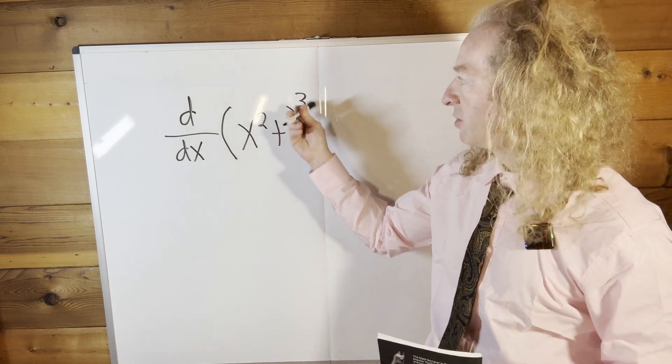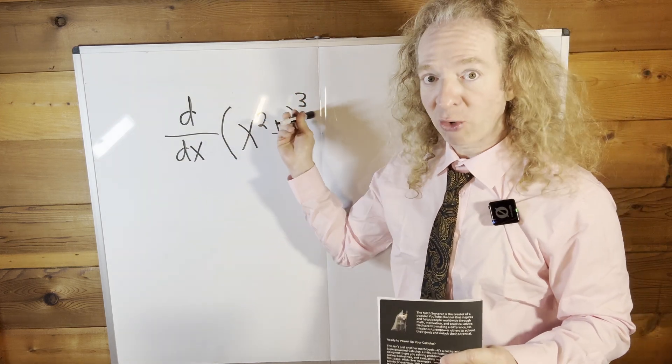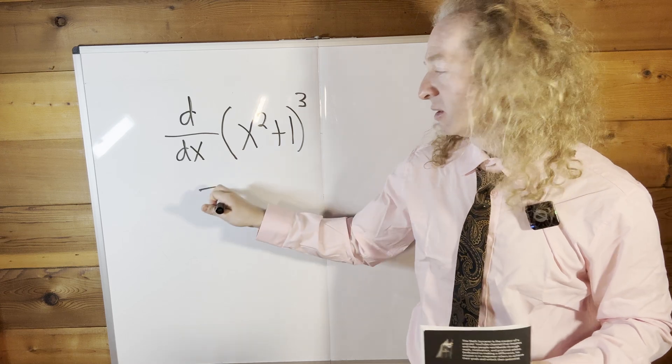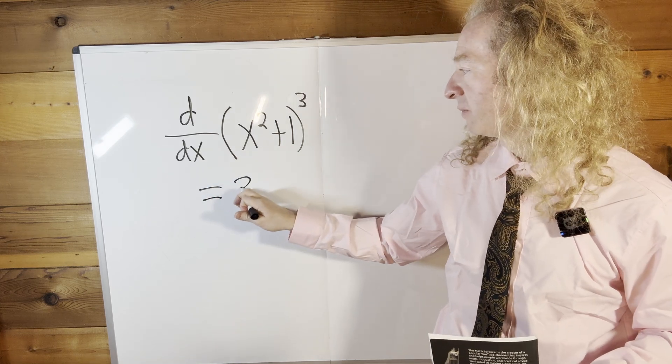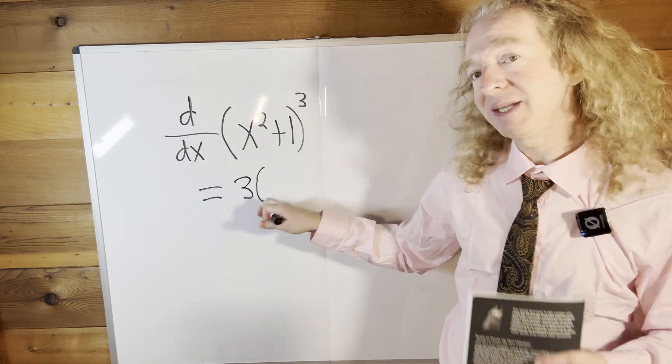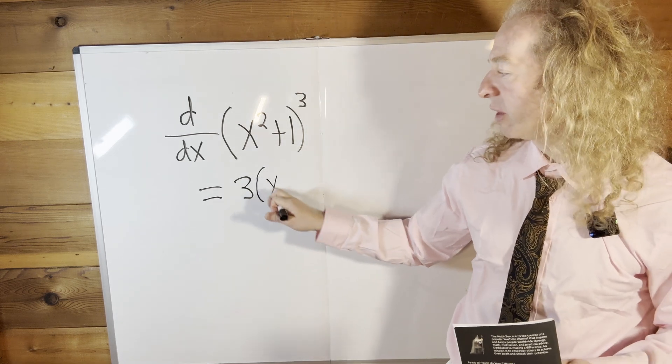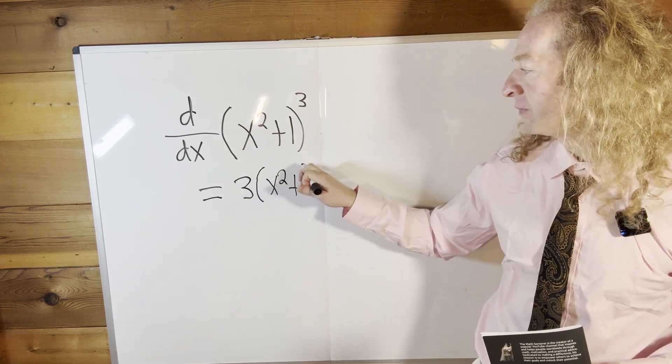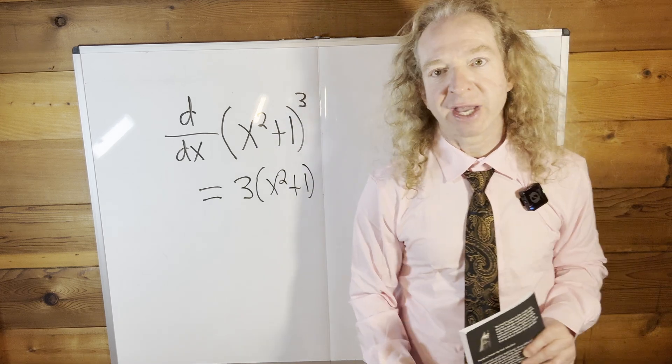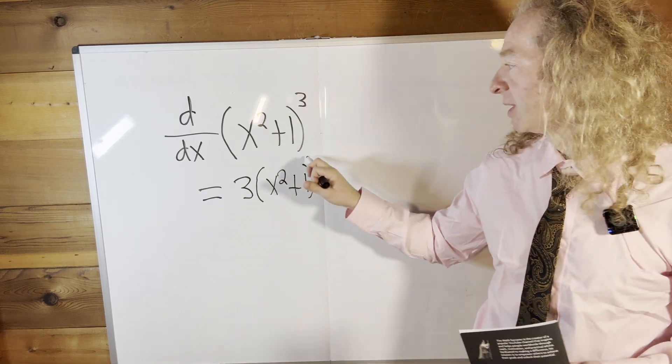So it's the derivative of the outside. Using the power rule, we're going to bring down that 3. So this is equal to 3. You evaluate it at the inside, so you leave the inside function untouched. So x squared plus 1, and then you subtract 1 from the exponent, so it will be 2.